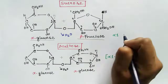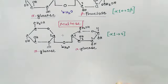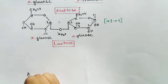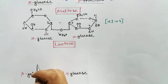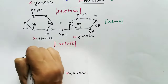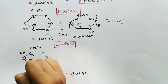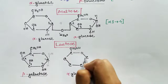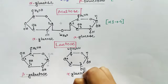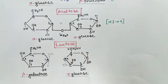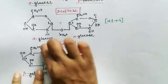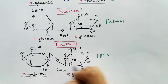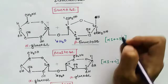Since the bond is between the alpha one carbon and the fourth carbon of the other glucose, the bond is called alpha 1-4. In the case of sucrose, as both anomeric carbons are involved, both alpha and beta are mentioned. Coming to lactose — it is another disaccharide made up of galactose and glucose. The galactose is beta galactose and the glucose is alpha glucose. The glycosidic bond is between the anomeric carbon of beta galactose and the fourth carbon of alpha glucose, so the bond is a beta 1-4 glycosidic bond.